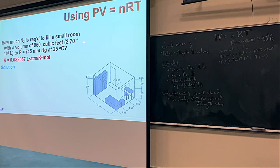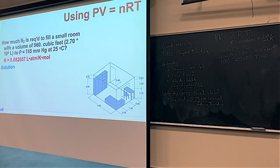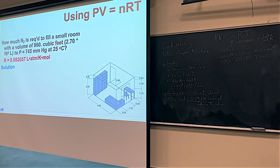We're going to fill this room with nitrogen. The pressure of the gas is going to be 745 millimeters of mercury — an atmosphere of pressure is 760, so that's a fairly good pressure. The temperature is about room temperature, 25 degrees Celsius. The question is: how much N₂ is needed?